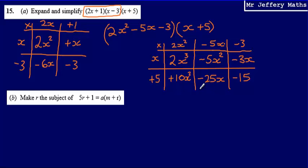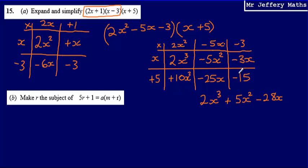So the last thing to do is to simplify this. This is going to give me 2x cubed. And then 10x squared minus 5x squared, that's going to give me plus 5x squared. Then I've got negative 25x minus 3x, that's going to give me minus 28x. And then finally that minus 15 by itself. So the final answer for question 15 part A is 2x cubed plus 5x squared minus 28x minus 15.